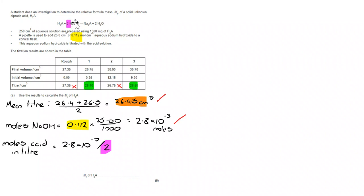But I'm working on the basis that this is a 1 to 2 mole ratio. So actually, I need to halve that value. And that takes me to the moles of acid 1.4 by 10 to the minus 3.